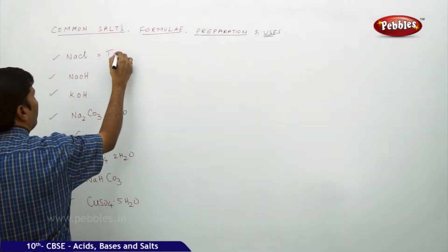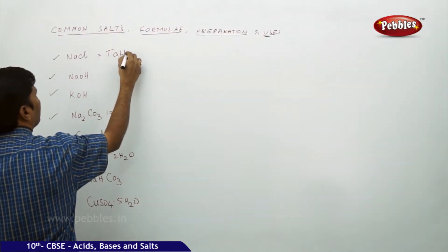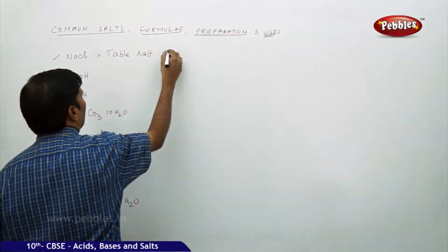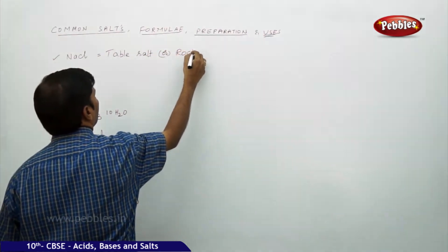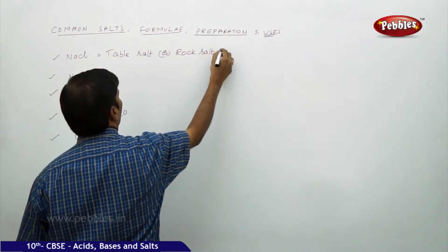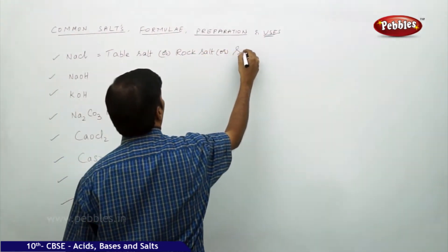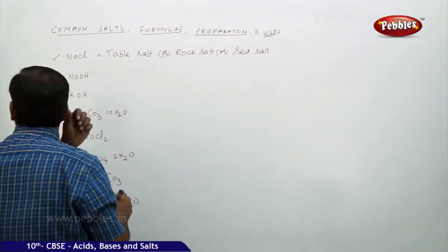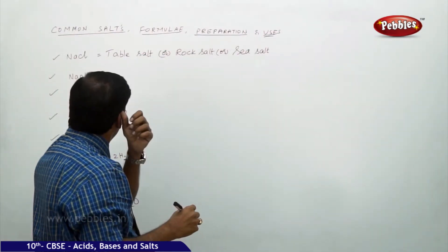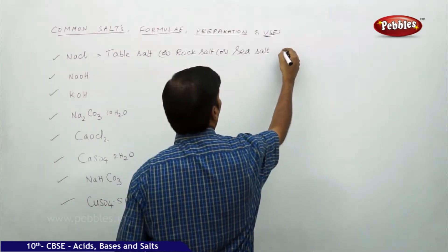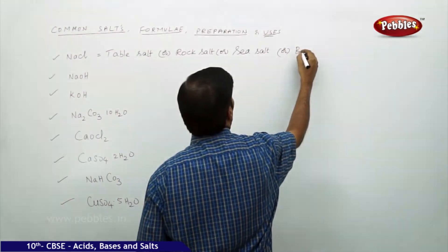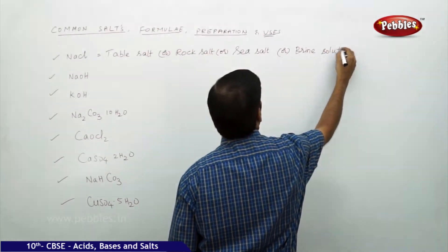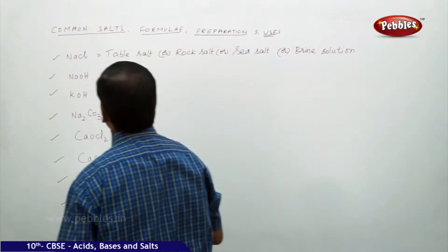NaCl is called table salt, rock salt, or sea salt. In aqueous solution it is also called brine solution.